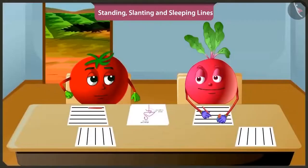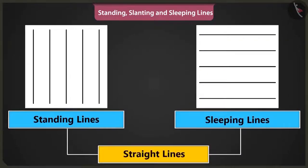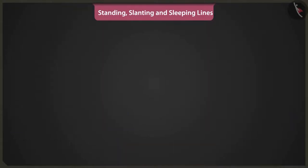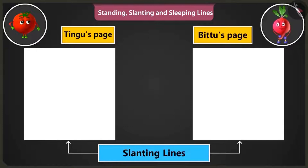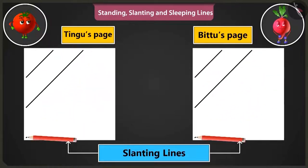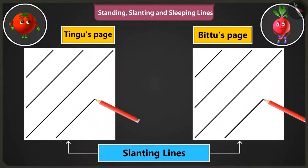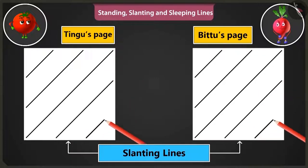You are right. Bittu, keep this in mind that the standing and sleeping lines are called straight lines. Yes, I will remember that. Come on, now let's practice making slanting lines. We have to make lines from the bottom left part to the top right part like this, one by one.